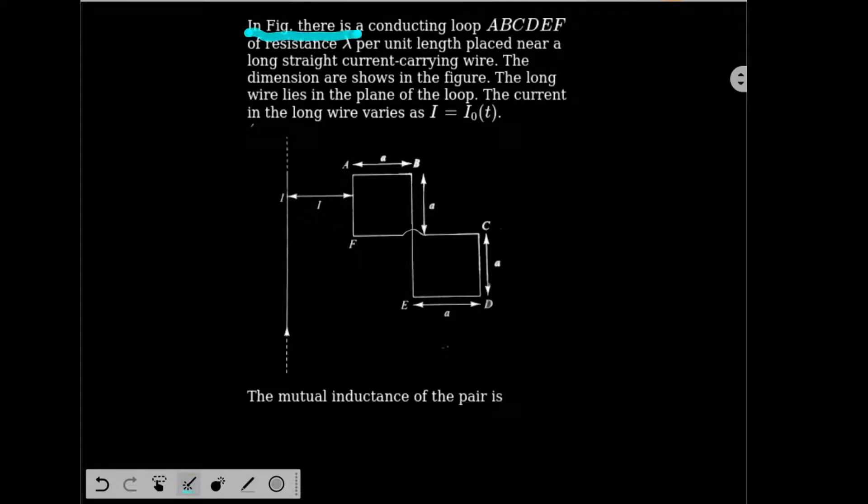See this question now. In the figure there is a conducting loop ABCDEF of resistance lambda per unit length placed near a long straight current carrying wire. So this is a long straight current carrying wire and we have a loop over here AB. The numbering is not done properly anyways, AB then it goes like this so it forms the shape of an 8.